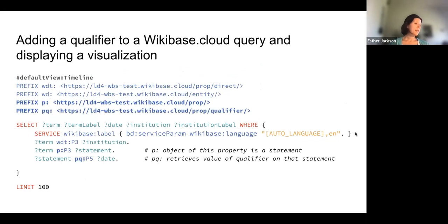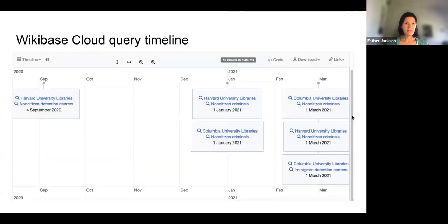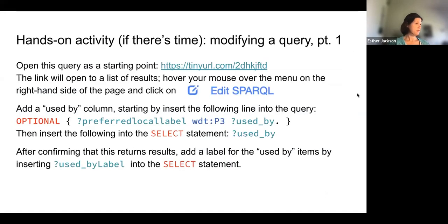As in the Wikidata query service, you can also choose a visualization after returning results, or specify it as a comment at the head of your query — for example, '#defaultView:timeline.' In this case, we constructed a timeline to show when different institutions adopted which preferred local headings. To bring in dates, which are qualifiers on 'use by' statements, we defined a couple more prefixes. Note that the dates here may be provisional or approximate for demonstration purposes. The results show that in September 2020, Harvard University libraries started using 'non-citizen detention centers'; in January 2021, 'non-citizen criminals' was a term both Harvard and Columbia University libraries started using.